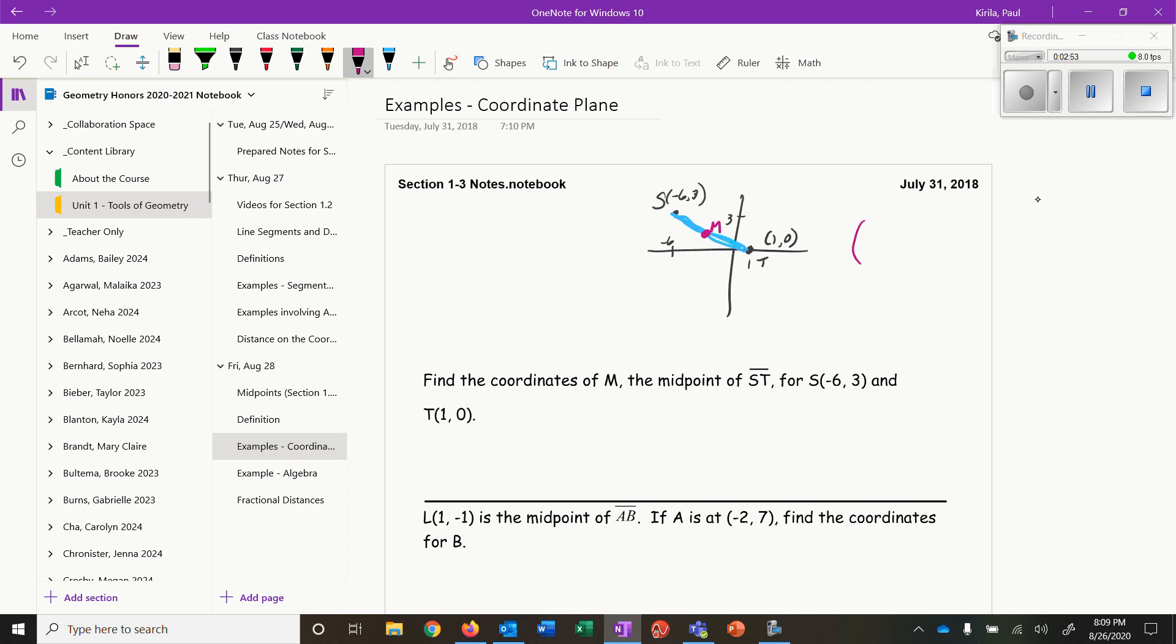To average the x's I have -6 plus 1, and then there are two of those so I divide by 2. For the y's I have 3 and 0, and there are two of those so I divide by 2. Simplifying this gives me -5/2 for x and 3/2 for y. Here are the coordinates for my midpoint.